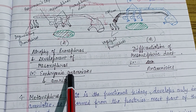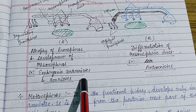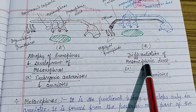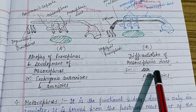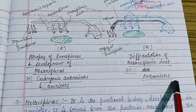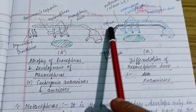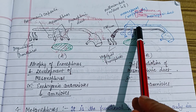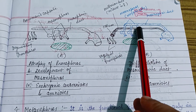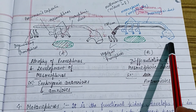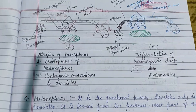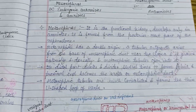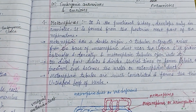The embryonic mesonephros is found in both anamniotes and amniotes, with differentiation of the mesonephric duct in amniotes. The mesonephros is also known as the Wolffian body, and the mesonephric duct — also known as the Wolffian duct — leads to the cloaca.